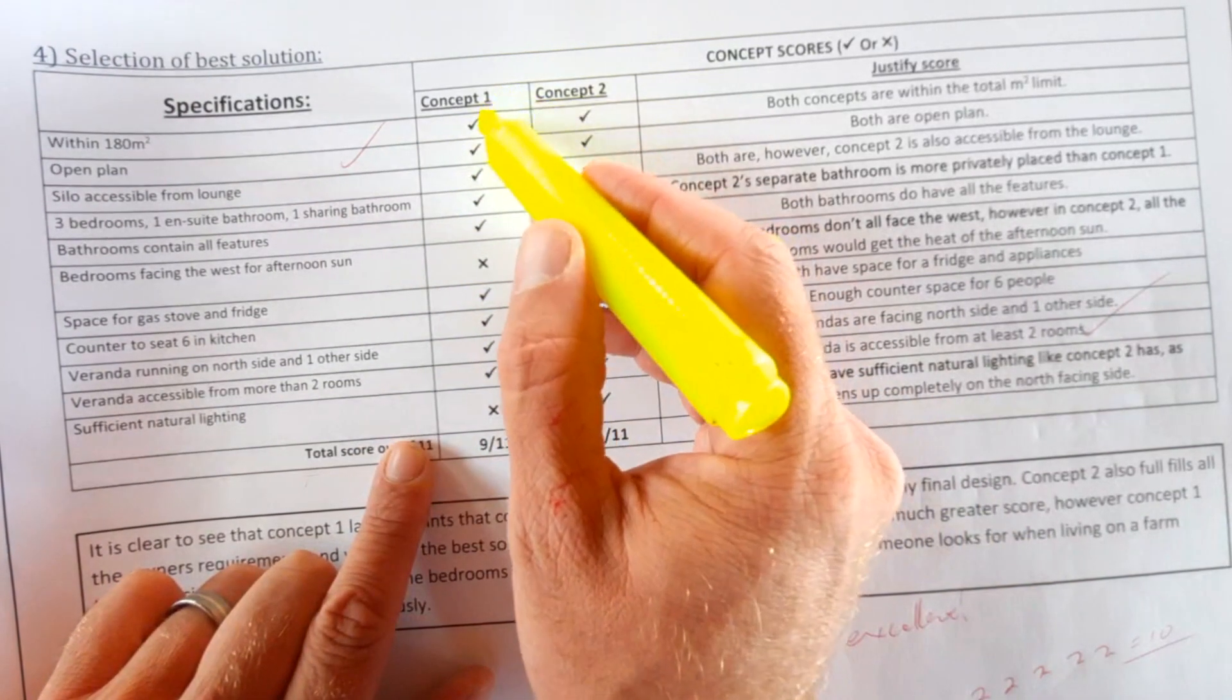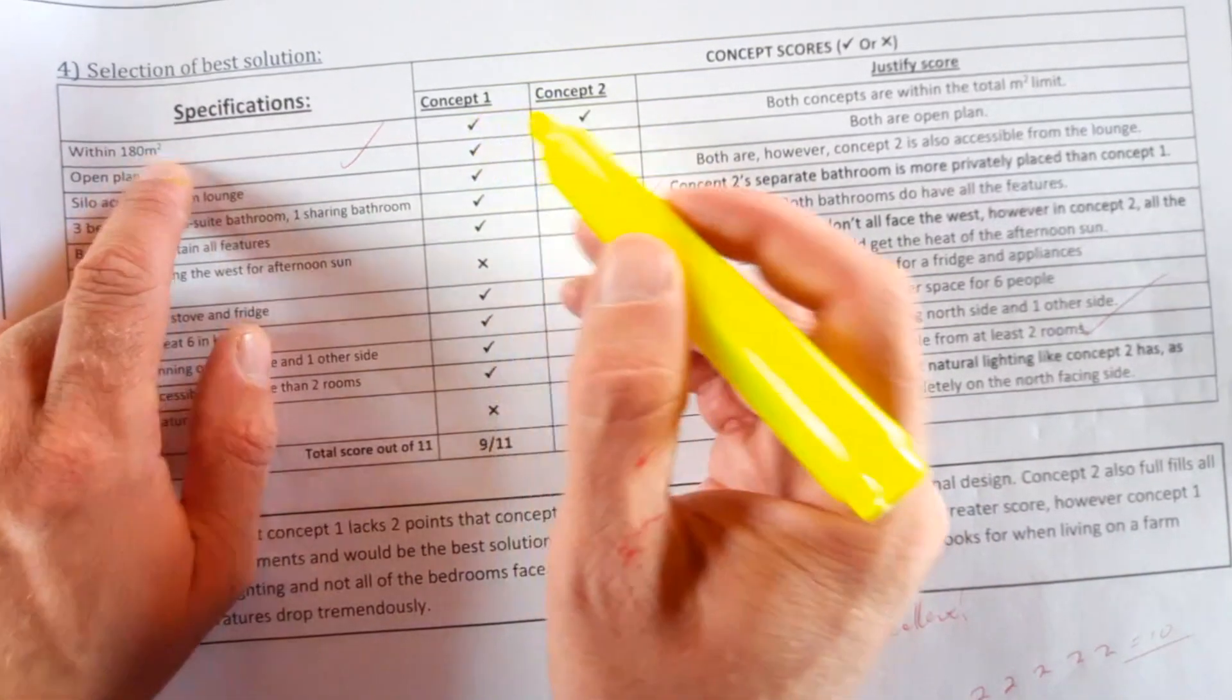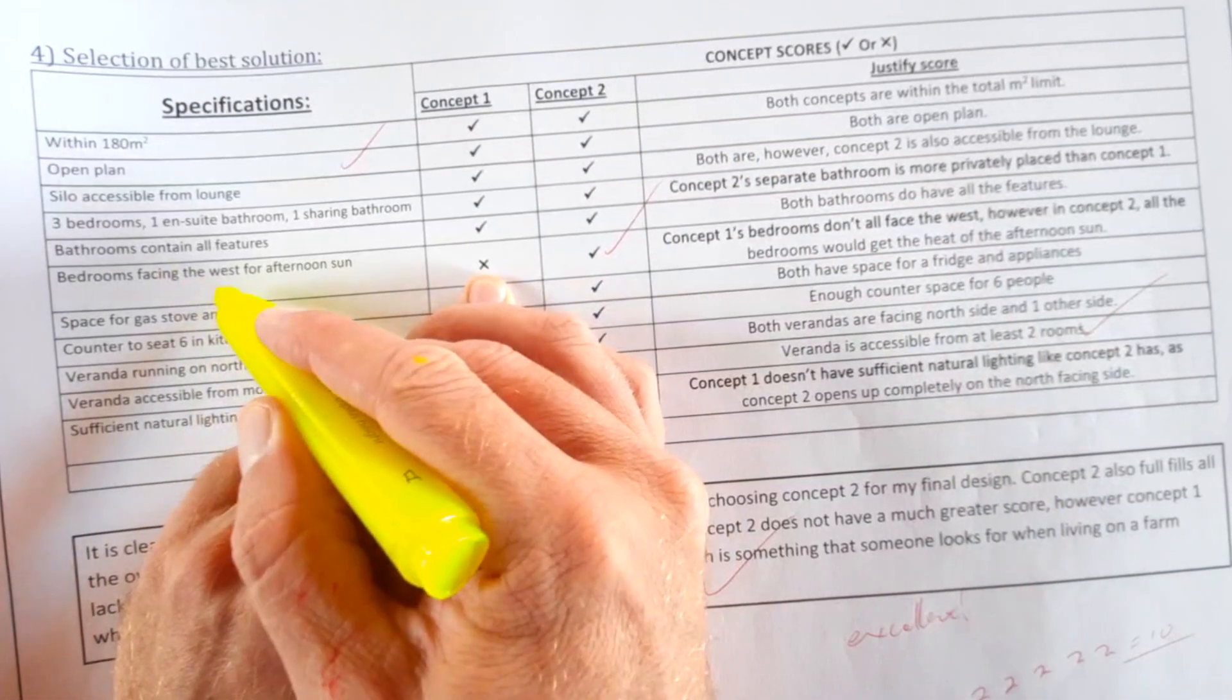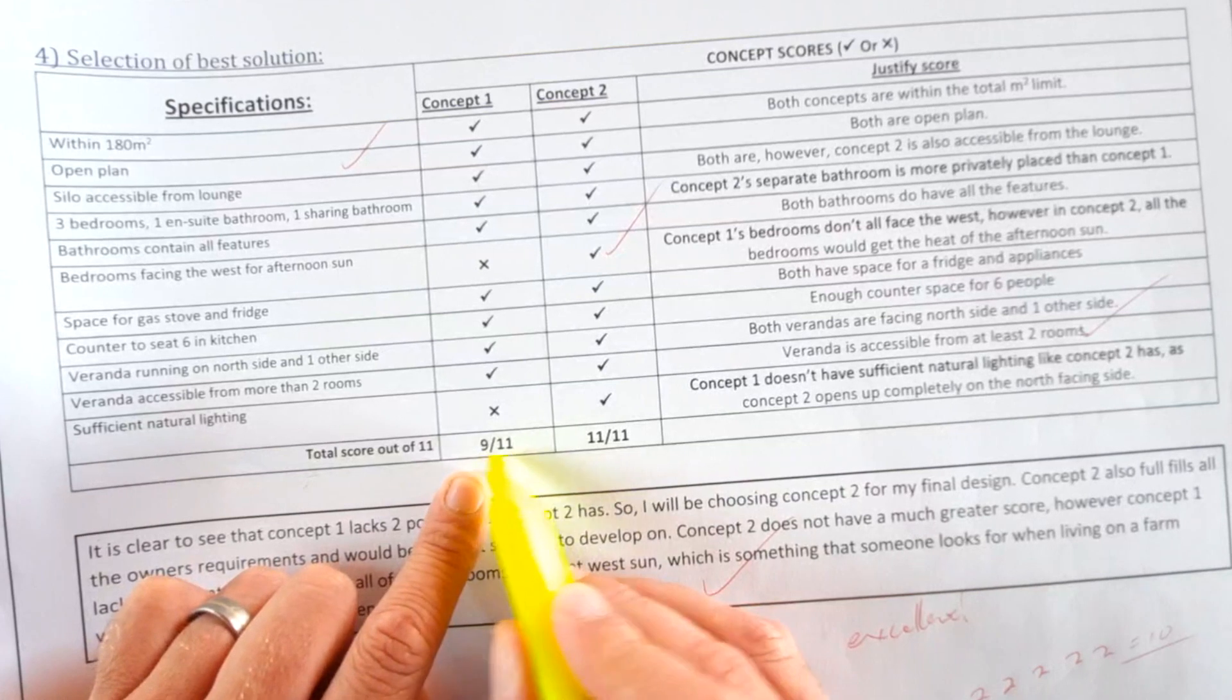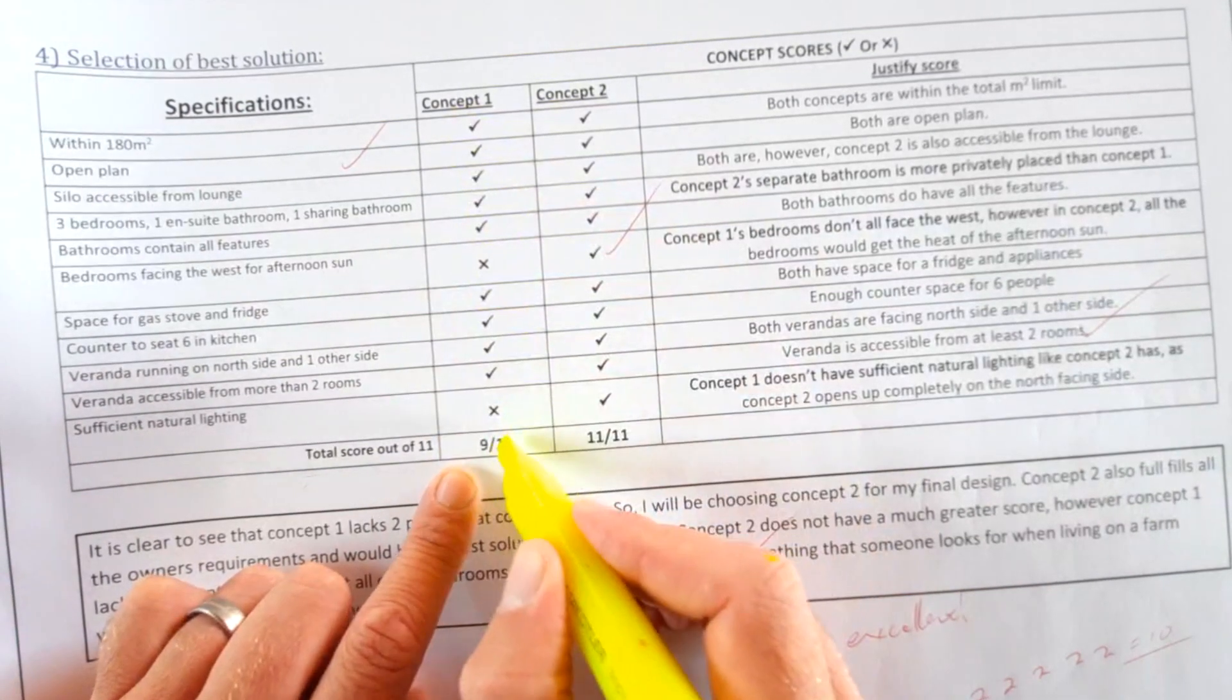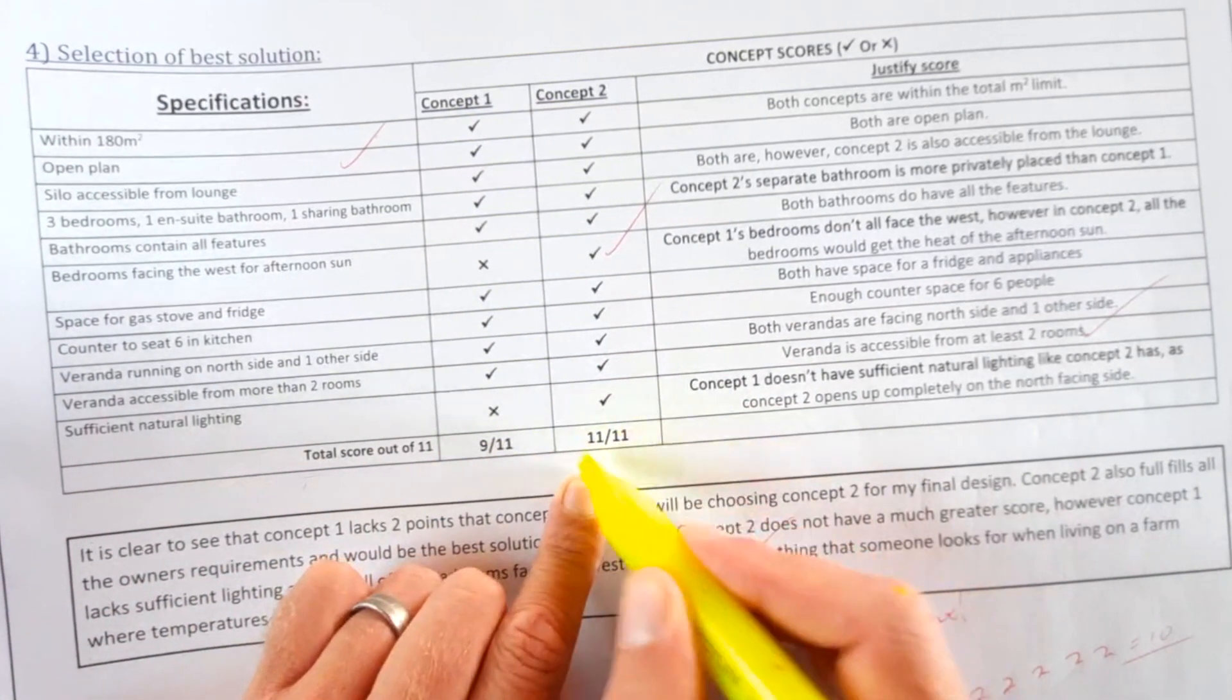So a tick, if it had met that requirement, or a cross, if it did not meet the requirement. In the end, counted all the crosses and the ticks, and the concept number one got nine out of 11. Concept two, 11 out of 11.